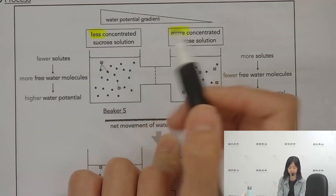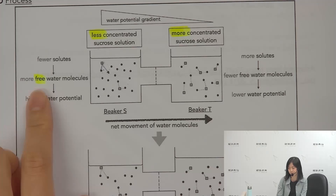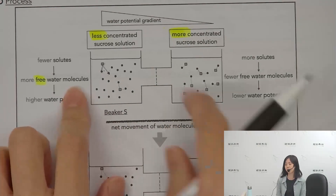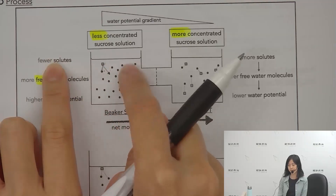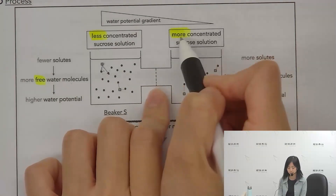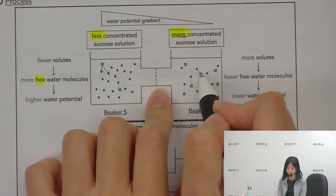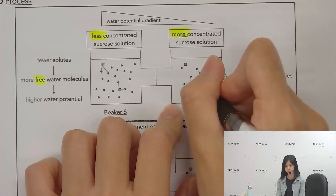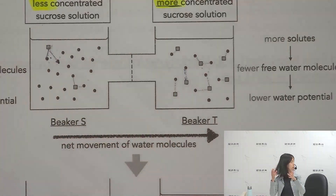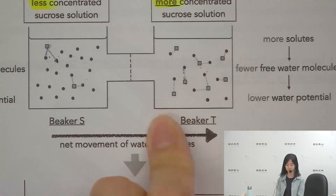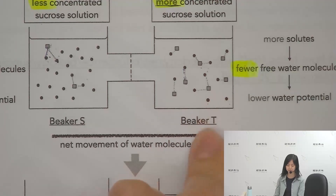If the sucrose cannot hold them, we can call those free water molecules. So you'll see that where there is less solute (sucrose), there are more free water molecules. Where there is a more concentrated sucrose solution, you'll see fewer free water molecules.